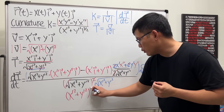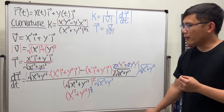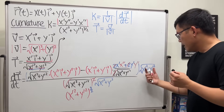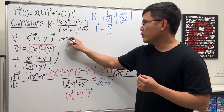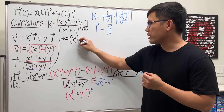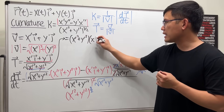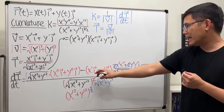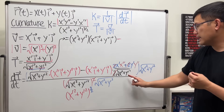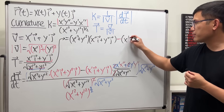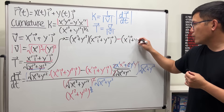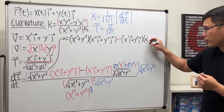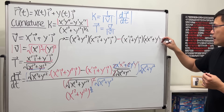For the top, the square root cancels with the inside term, leaving x-prime squared plus y-prime squared times x-double-prime i plus y-double-prime j. Then subtract: x-prime i plus y-prime j times the quantity x-prime x-double-prime plus y-prime y-double-prime. That's the full numerator, all over x-prime squared plus y-prime squared to the three-halves power.